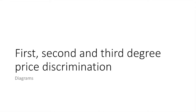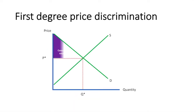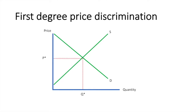Now let's take a look at the diagrams of each of the three. First degree price discrimination is when a seller charges each consumer the maximum price they are willing to pay. This would essentially transfer all consumer surplus to the producer. While a competitive market diagram shows typical equilibrium, we have to change it for first degree price discrimination — this is how producer surplus looks after the consumer surplus has been transferred.